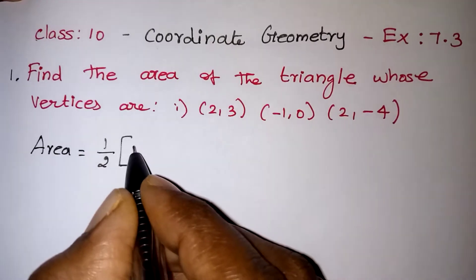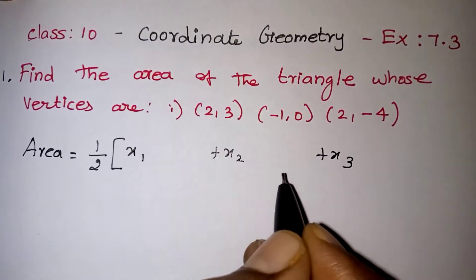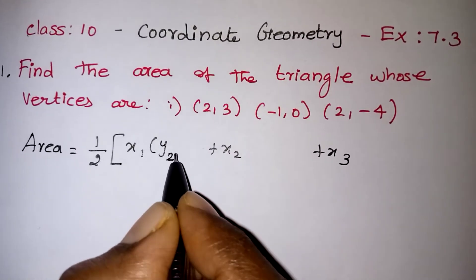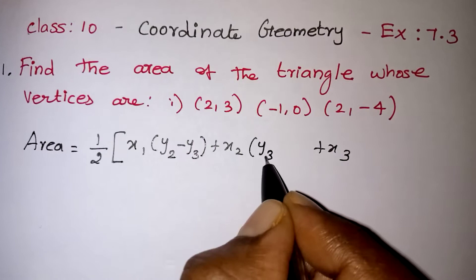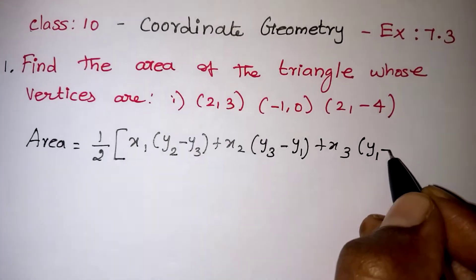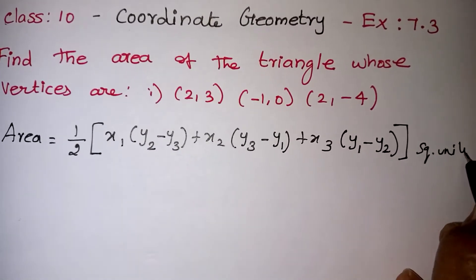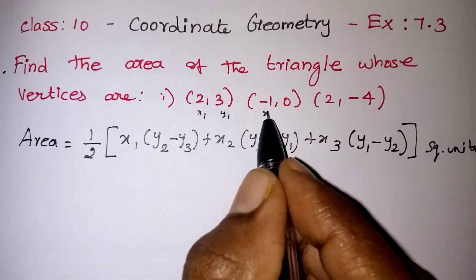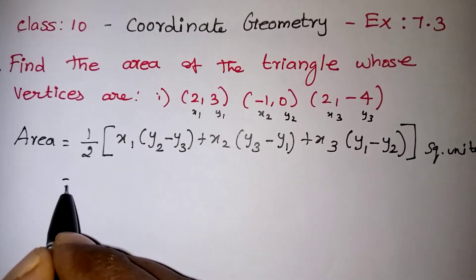The area formula is: Area = half into x1(y2 - y3) + x2(y3 - y1) + x3(y1 - y2). The order of terms should follow 1, 2, 3 cyclically — so after 3 comes back to 1. The result will be in square units. From our question, (2, 3) is (x1, y1), (-1, 0) is (x2, y2), and (2, -4) is (x3, y3). Now we apply these values.